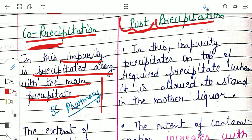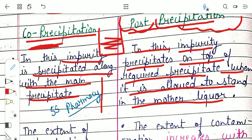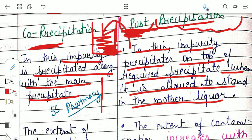In post-precipitation, as the name suggests, 'post' means after — so this occurs after the main precipitate has been formed. The impurity precipitates on top of the required precipitate when it is allowed to stand in the mother liquor. For example, if precipitates are already formed in a beaker and allowed to remain in the liquid for a long period, another impurity starts using the precipitating agent, forms its own precipitate, and gets deposited on the main precipitate — making it impure.